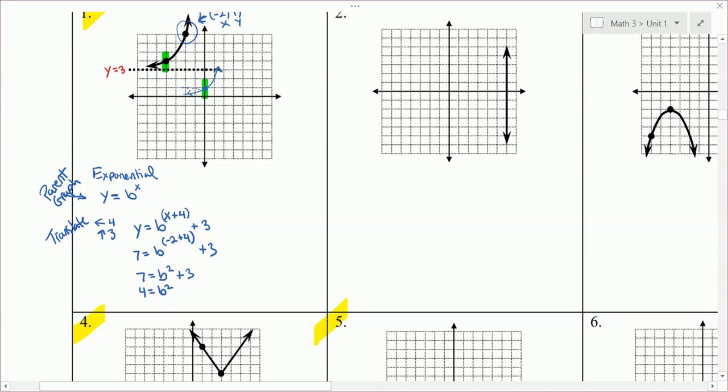What squared is 4? It could be 2 squared or negative 2 squared, but when we work with exponential functions, we're only going to work with positive bases. So b squared equals 4. If you take the square root, we're going to only work with the positive square root and we get b is 2. So now we found b. Remember, we're trying to write the equation, so plug the 2 into b.